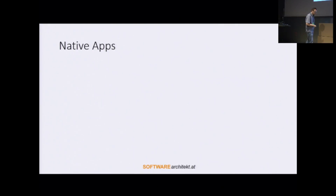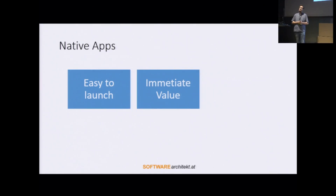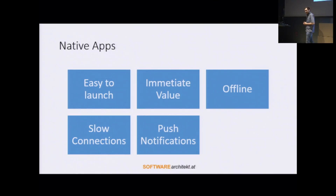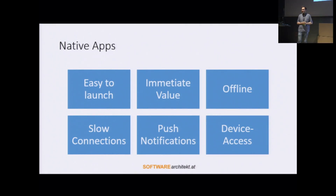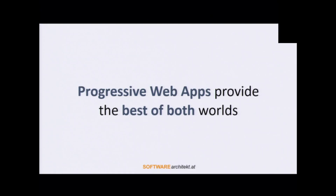But there is also another platform — the platform for native apps. Native apps provide different advantages. For instance, they are very easy to launch: you just touch or click on some icon at the home screen and the native application comes up. They immediately provide value — you can launch them very quickly and they show meaningful information. They also work offline, even when there are slow internet connections. And they provide push notifications as well as device access.